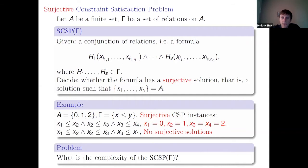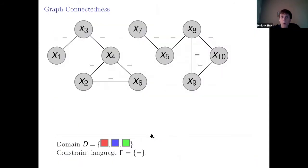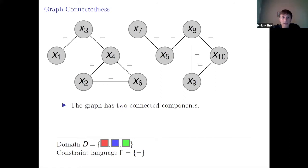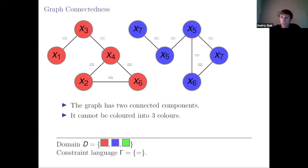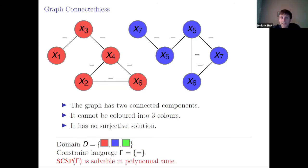The main question I am addressing today is: what is the complexity of the surjective CSP for different constraint languages gamma? One trivial example: on a three-element domain with three colors and just one predicate equality, any instance can be viewed as a graph. For example, a graph with just two connected components cannot be colored into three colors, so that instance does not have a surjective solution.